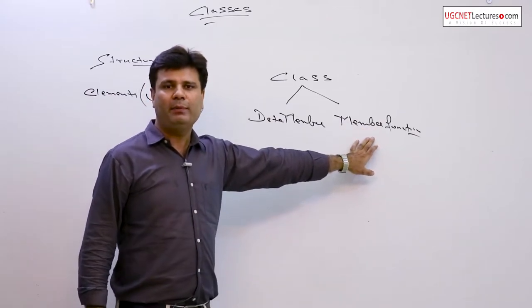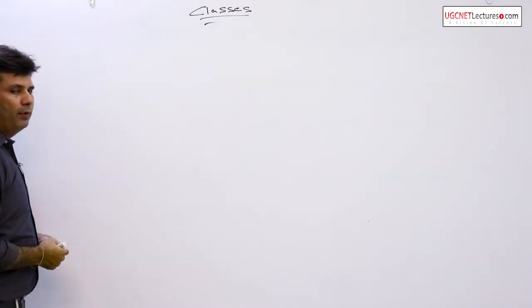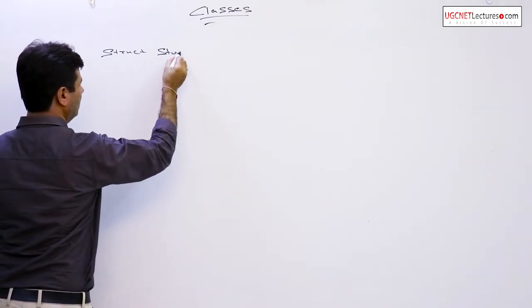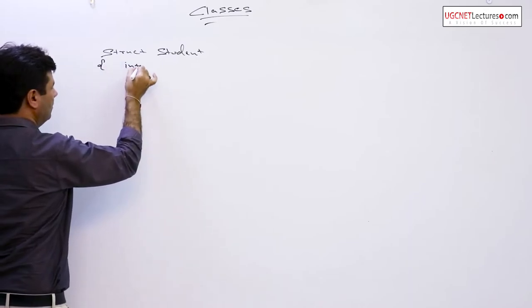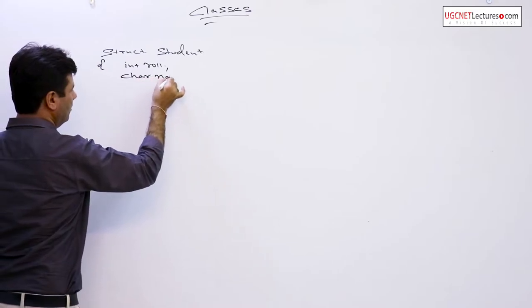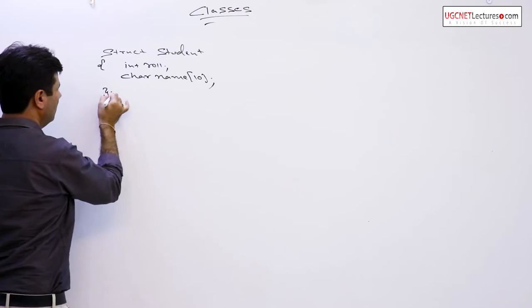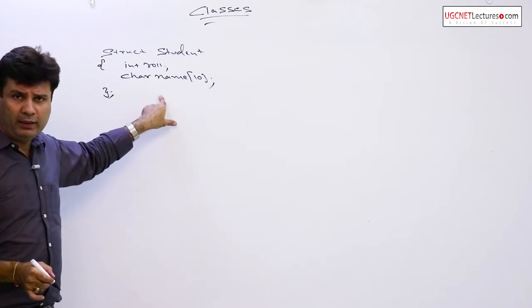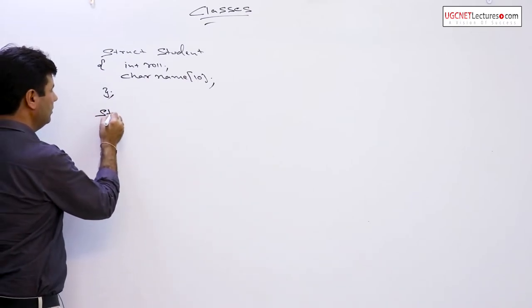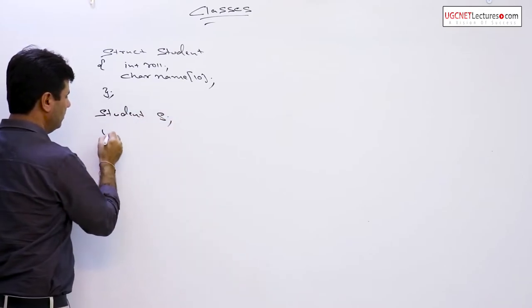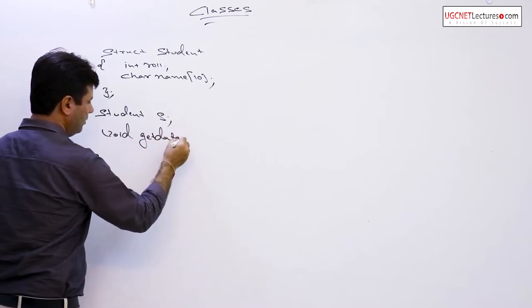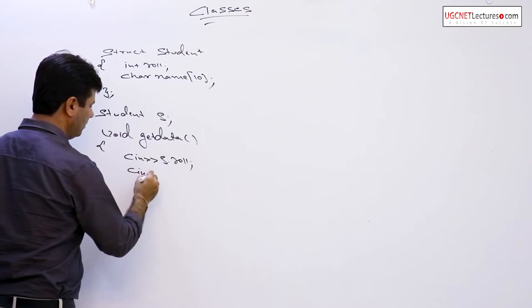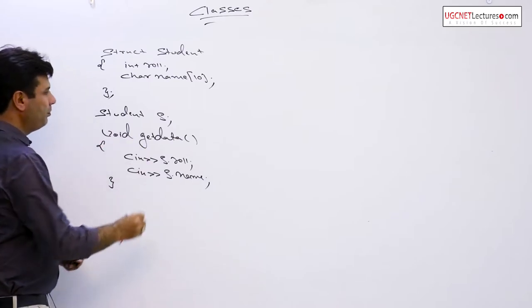How can the things be achieved, how can the things be implemented? I'll give you one small example. I am writing a small code of structure. As we know, structure is a group of elements. Right now, I am having two variables, role number and name. Everything is by default public within a structure.